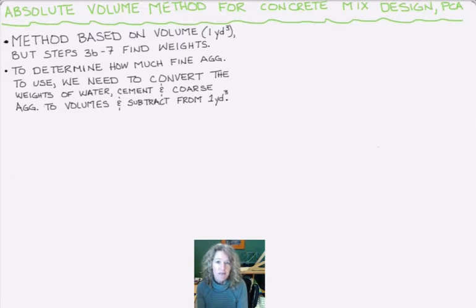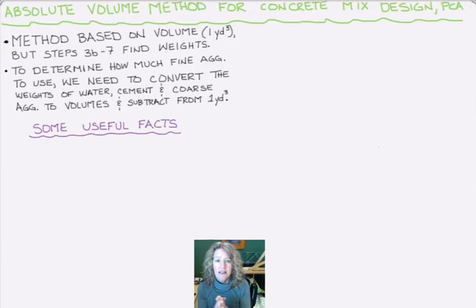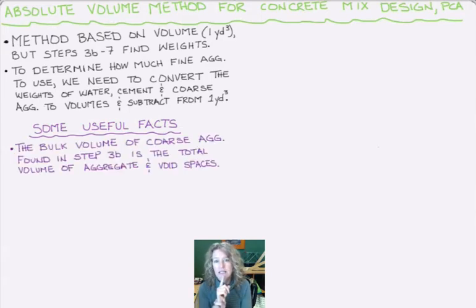Well, let's think about some facts that we know. First off, you might be saying, hold on, in step 3B we found the bulk volume of the coarse aggregates. Why can't we just use that?